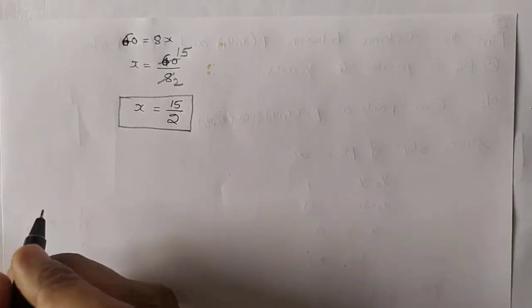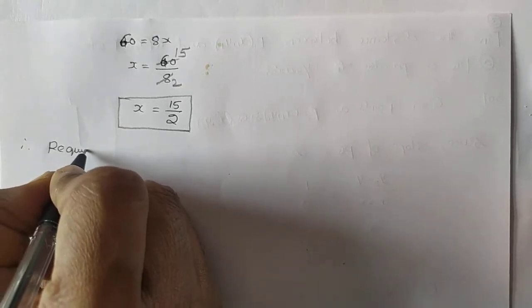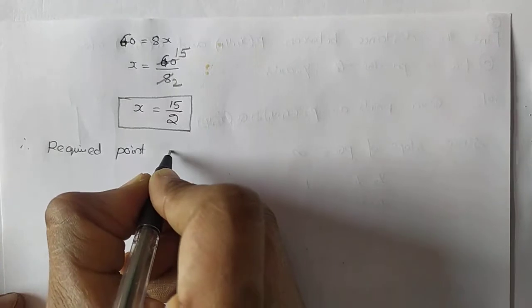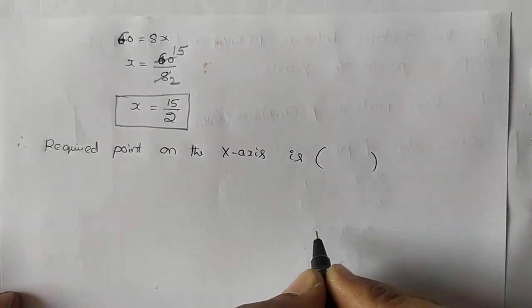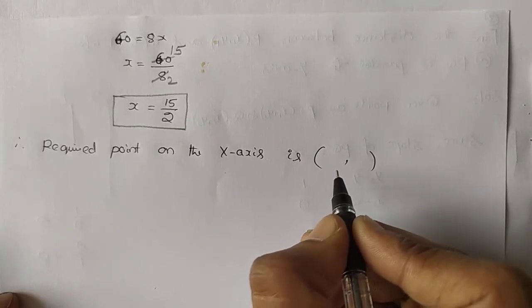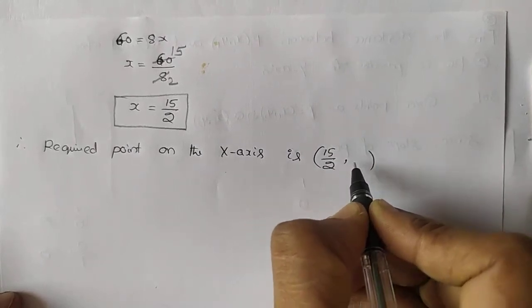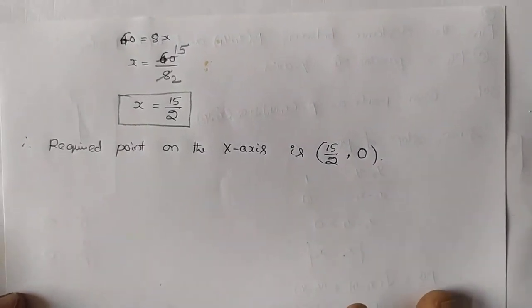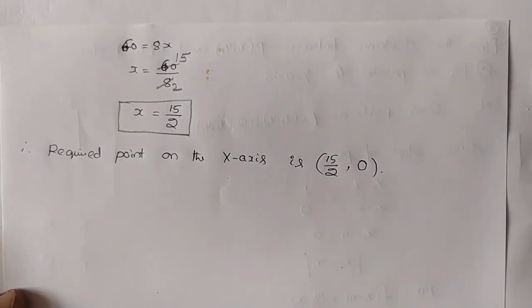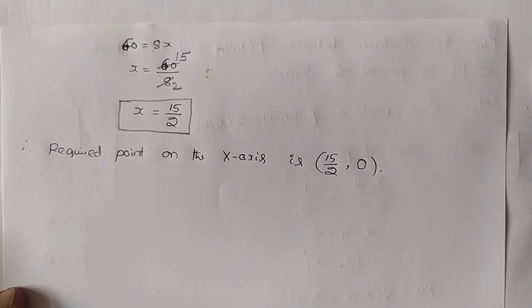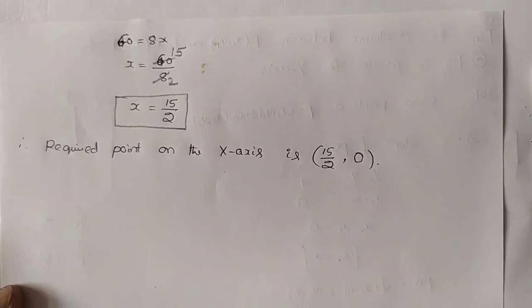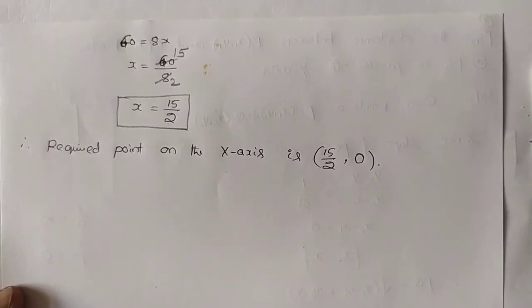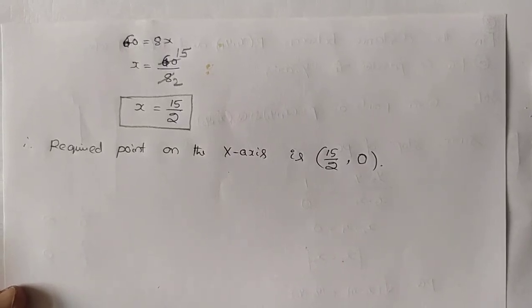We found x equals 15 by 2. Therefore, the required point on the x-axis is P(15/2, 0). For straight lines, you need more and more basic concepts from lower classes as well as previous class concepts. Otherwise, you will find it very difficult to understand these concepts.